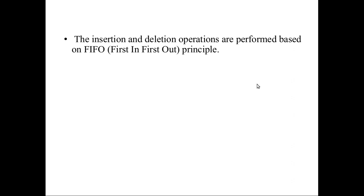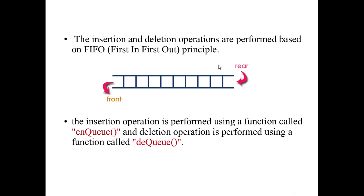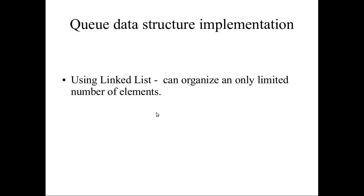So insertion, deletion, first in, first out. This is the front and the rear. On the front end you have deletion and on the rear end you have insertion. Insertion operation is called NQ and deletion is called DQ. So how do we implement the Queue data structure?